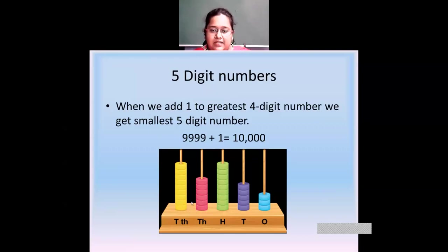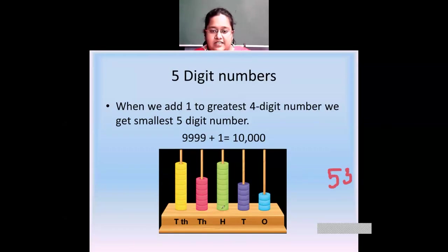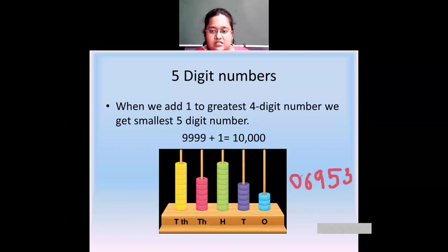You can see this abacus. What is the number shown on the abacus? In one's place I have three. In tens place I have five beads, so I write five. In hundreds place I have nine beads, so I write nine. In thousands place I count six beads, so six. And in ten thousands place there are nine beads again. So the number shown on the abacus is 96,953.